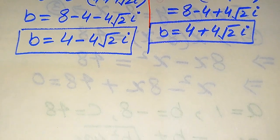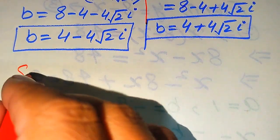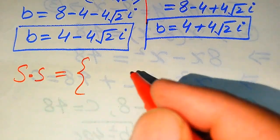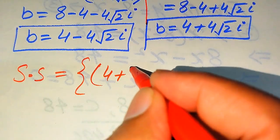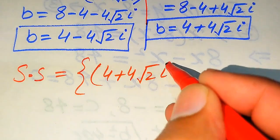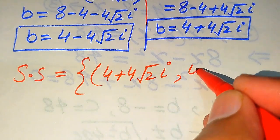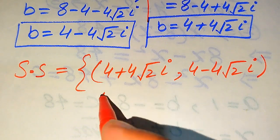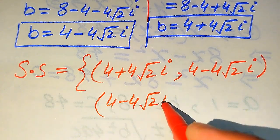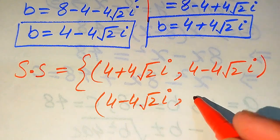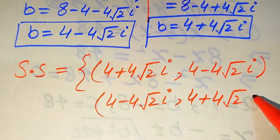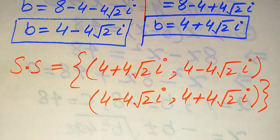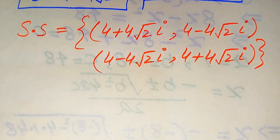Finally, there are two solutions. The first solution is a equals 4 plus 4 root 2 iota and b equals 4 minus 4 root 2 iota. The second solution is a equals 4 minus 4 root 2 iota and b equals 4 plus 4 root 2 iota. These are the two solutions of the given system of equations, and this is our final answer. Thank you so much for watching this video, please subscribe to my channel for more exciting videos.